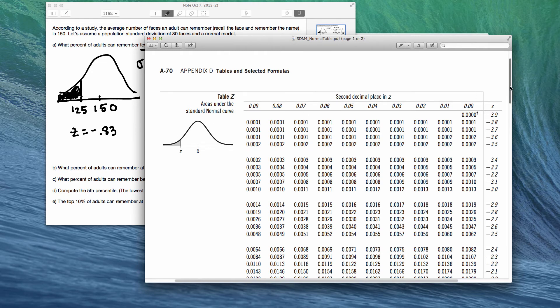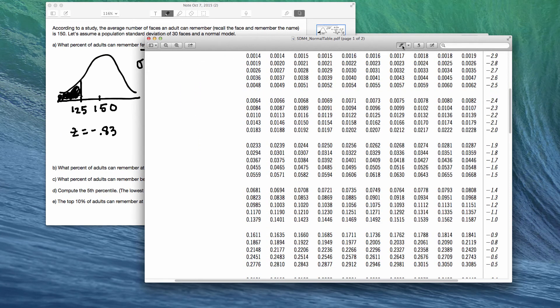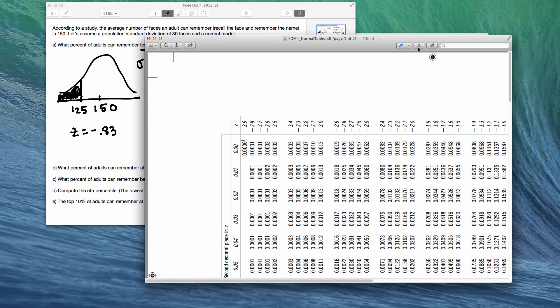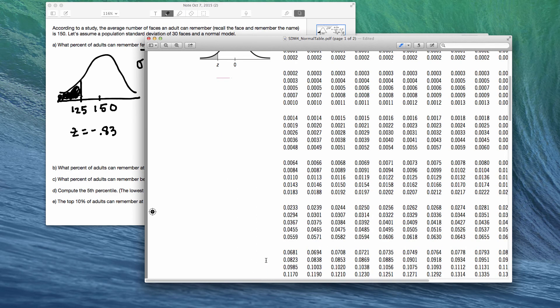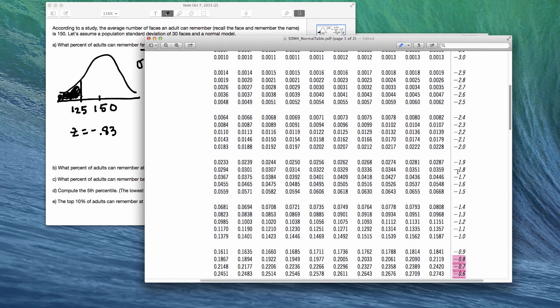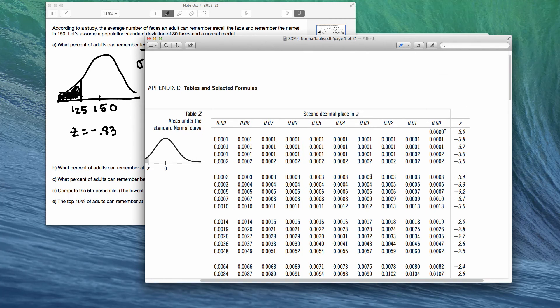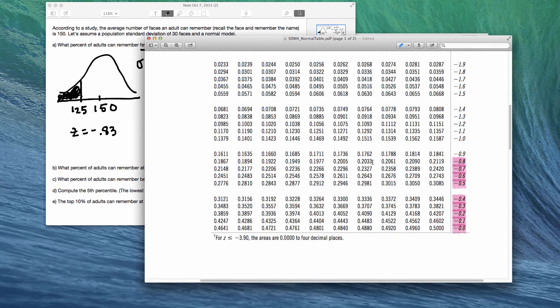So we have negative 0.83. I need to go down to negative 0.8. We're still going negative 0.8 right here. So negative 0.8, and then, what column do we work with? We need that 0.03 column, so I need to go back up to the top. 0.03, okay. So that is the fourth over, keep on scrolling down, negative 0.83. So here we go. 0.2033. So that means there's about 20% area to the left of negative 0.83.